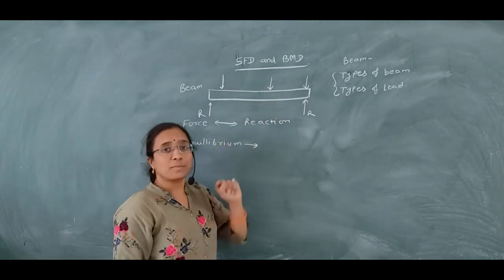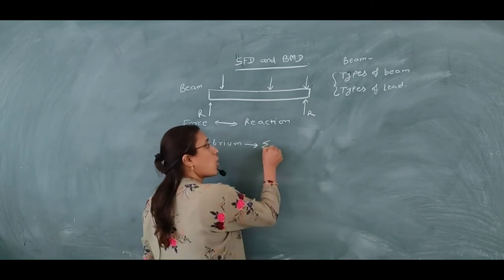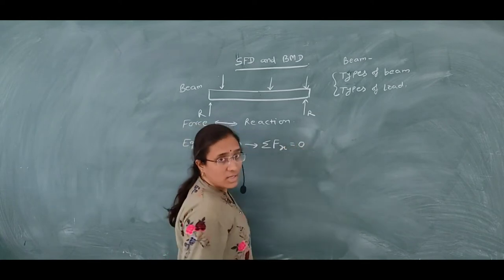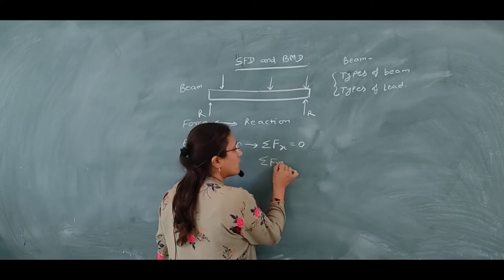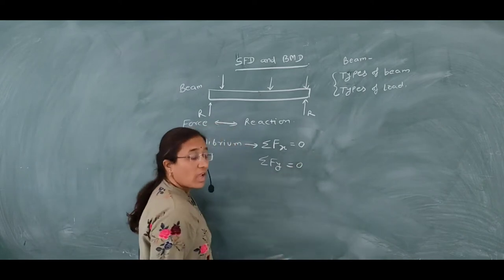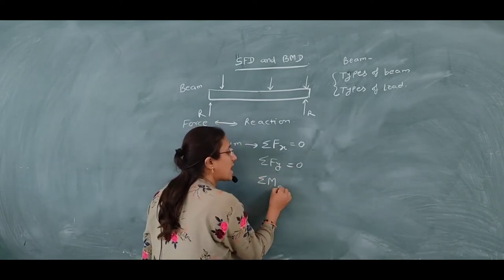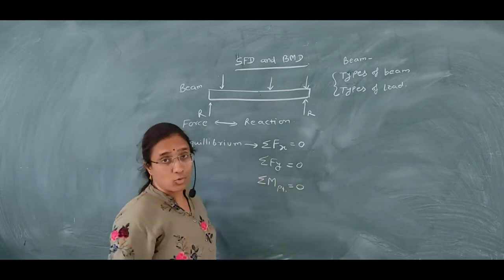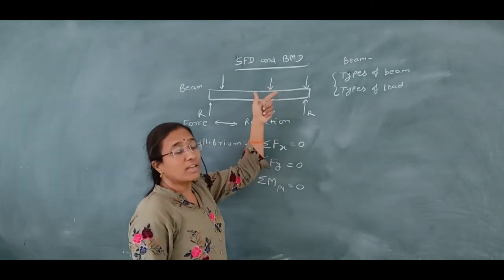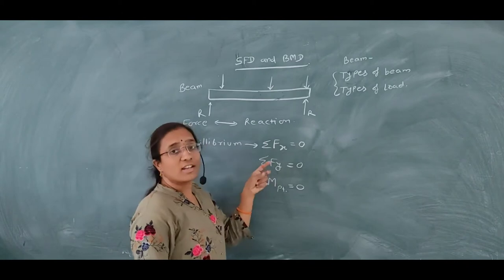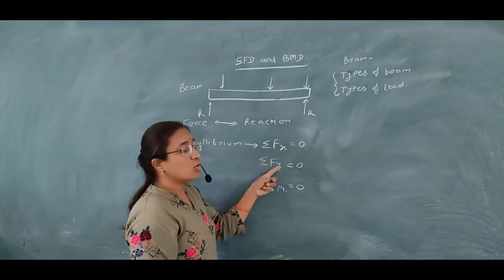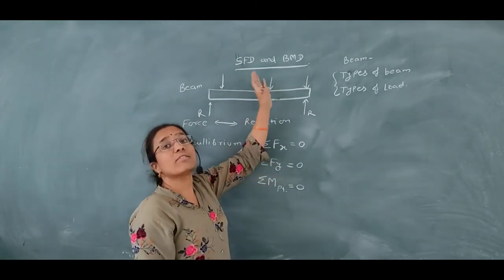Now, equilibrium condition is satisfied when: the sum of all horizontal forces, that is in the x-direction, is equal to zero; the sum of all vertical forces, that is in the y-direction, whether upward or downward, should be zero; and the sum of all moments at any point of the beam must be zero. If all three are zero, it means the beam is in equilibrium condition.